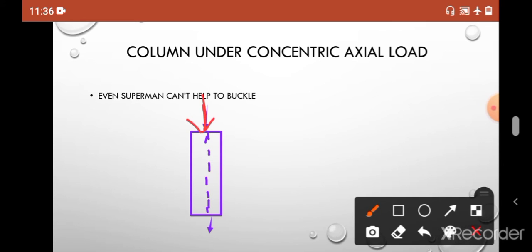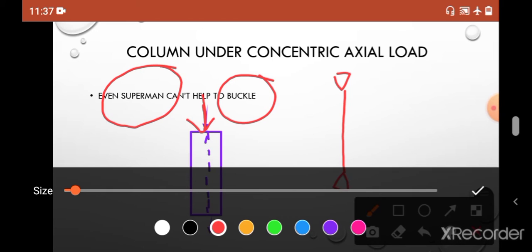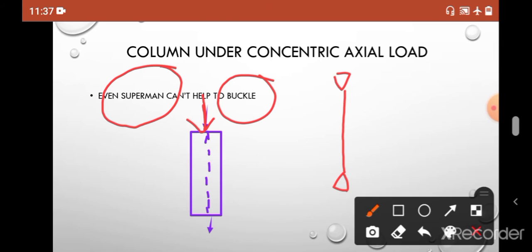...in that case, even Superman cannot help this column to buckle. If you don't know what buckling actually means, let's say this is a column with support at both ends, and when it buckles, the shape becomes something like this. So this is known as buckling of column.